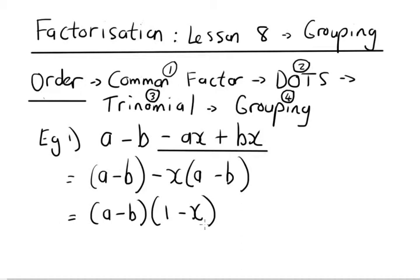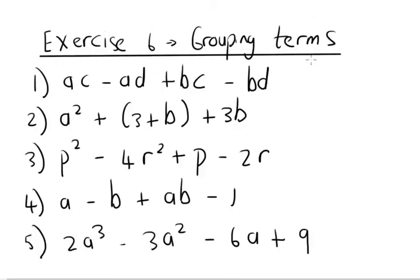We're going to give you some exercises. There are five sums that follow, and you can just follow the same protocol. Remember, if it doesn't work you can always try a different grouping. Please write down Exercise 6 — it will be our last exercise for now. After you've tried to complete it, have a look at the answers. For number 4, take note that's a 1 there — it's a minus b plus ab minus 1.